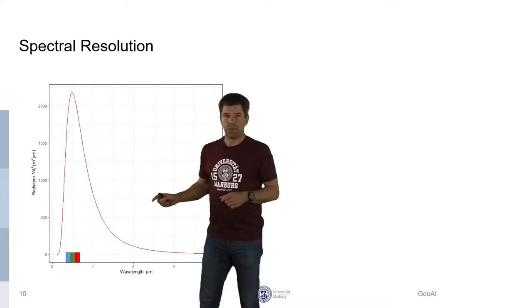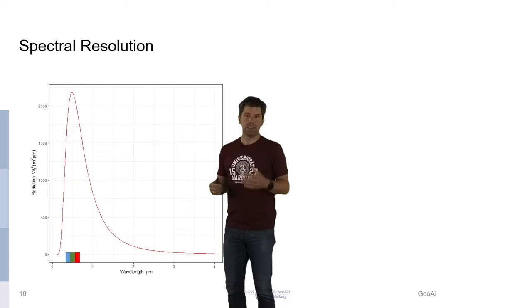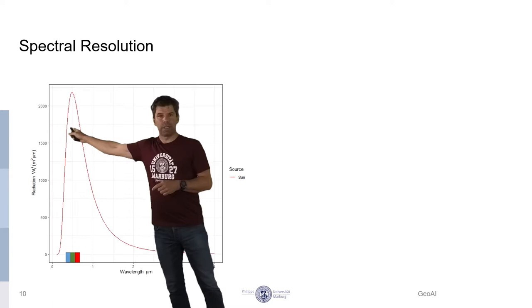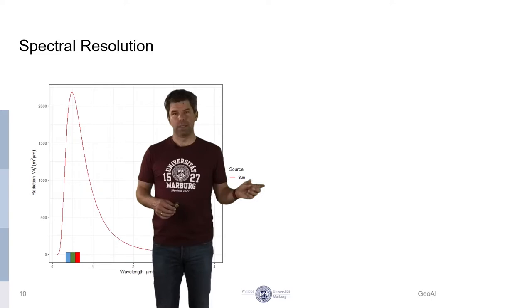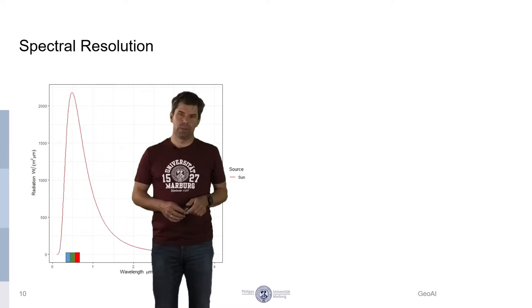We will have a closer look at that. You already know that's the radiation curve which reaches the Earth from the sun, so it's the solar radiation reaching the Earth. We have a maximum of that radiation around 0.5 micrometers. And indicated below here are the visible spectrum, starting from the blue light around 0.3 to 0.4 micrometers, over the green light to the red light.